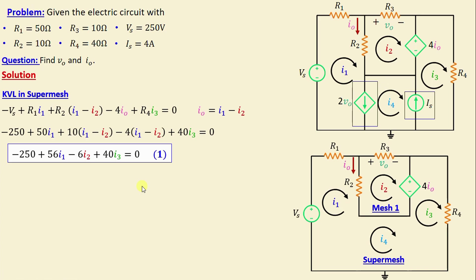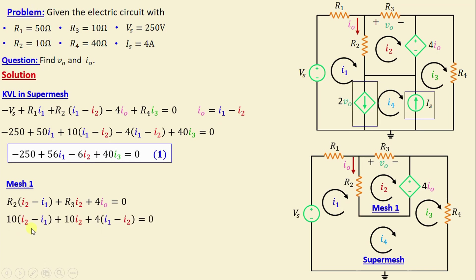Let's move on to mesh 2. By applying Kirchhoff's Voltage Law in mesh 2, we obtain: R2·(I2 − I1) + R3·I2 + 4·IO = 0. Substituting IO = I1 − I2, we get: 10·(I2 − I1) + 10·I2 + 4·(I1 − I2) = 0. Simplifying, we obtain: −6·I1 + 16·I2 = 0. We call this Equation 2.